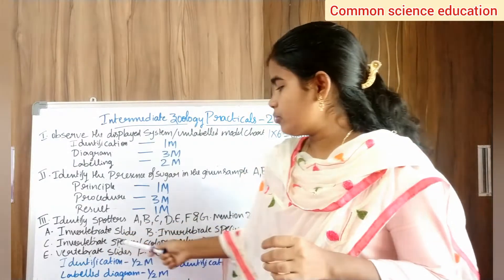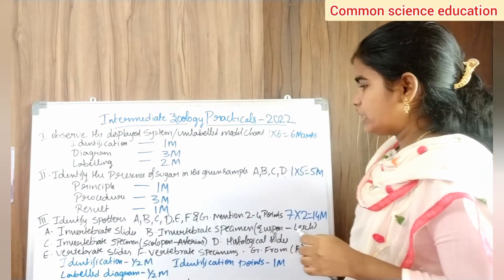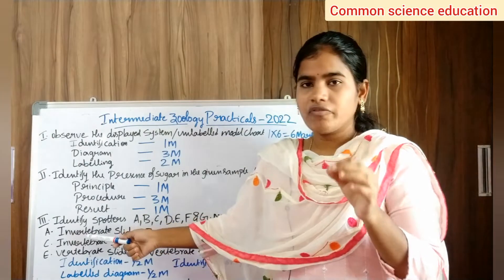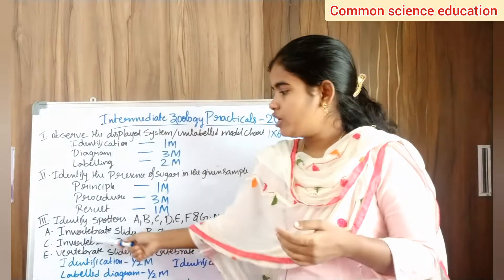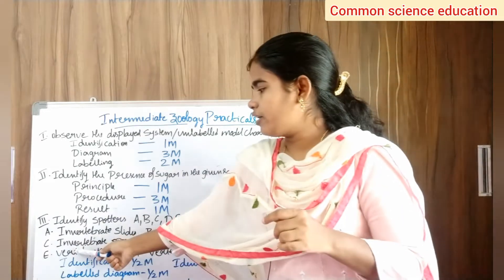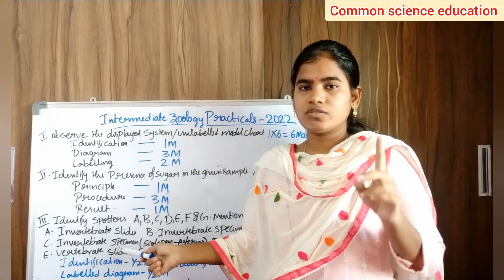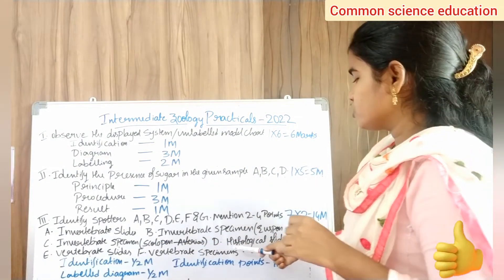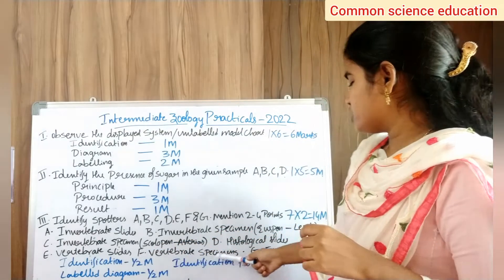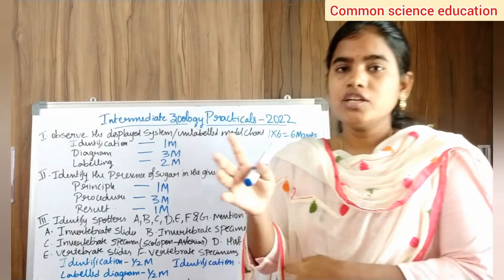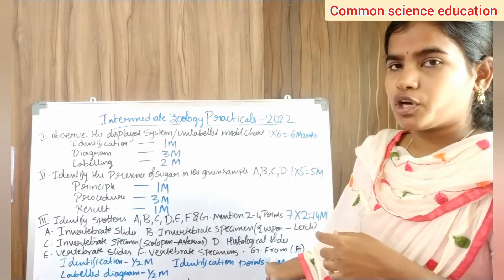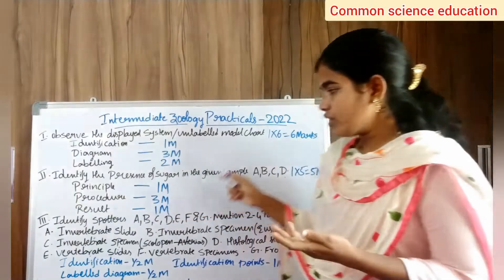The categories in Roman number 3 are: A — invertebrate slides, B — invertebrate specimens (sponge to leech), C — vertebrate specimens (scolopendra and asterias), D — histological slides, E — vertebrate slides, and F — vertebrate specimens. Joints (category G) are completely deleted from the syllabus.